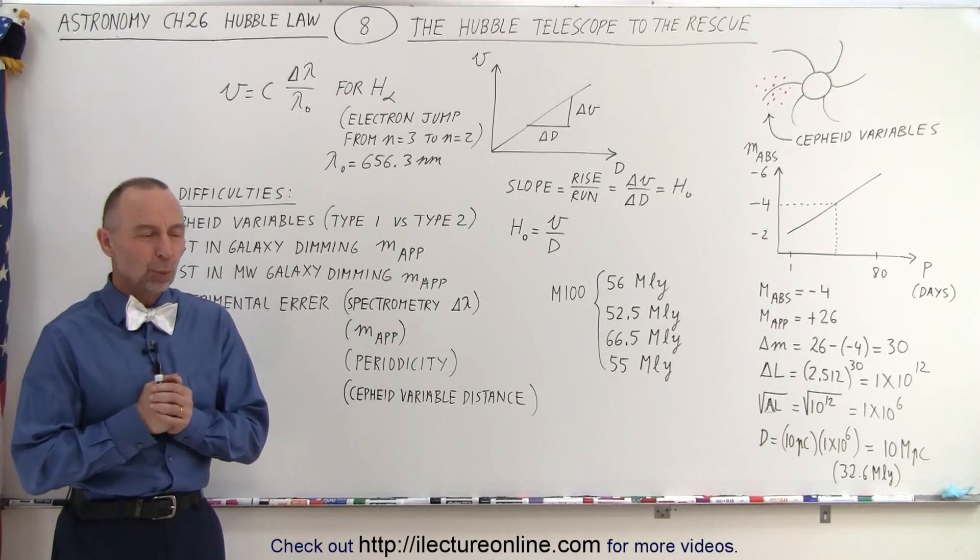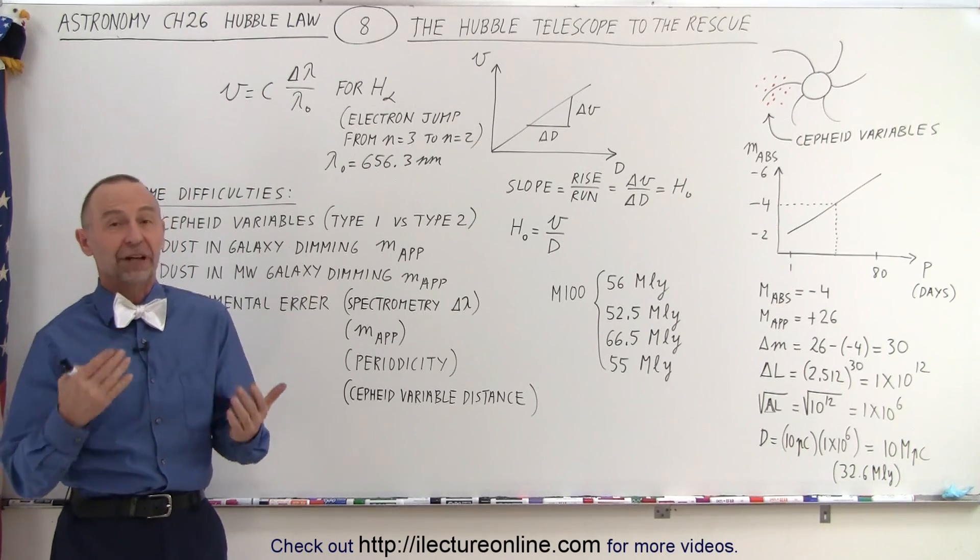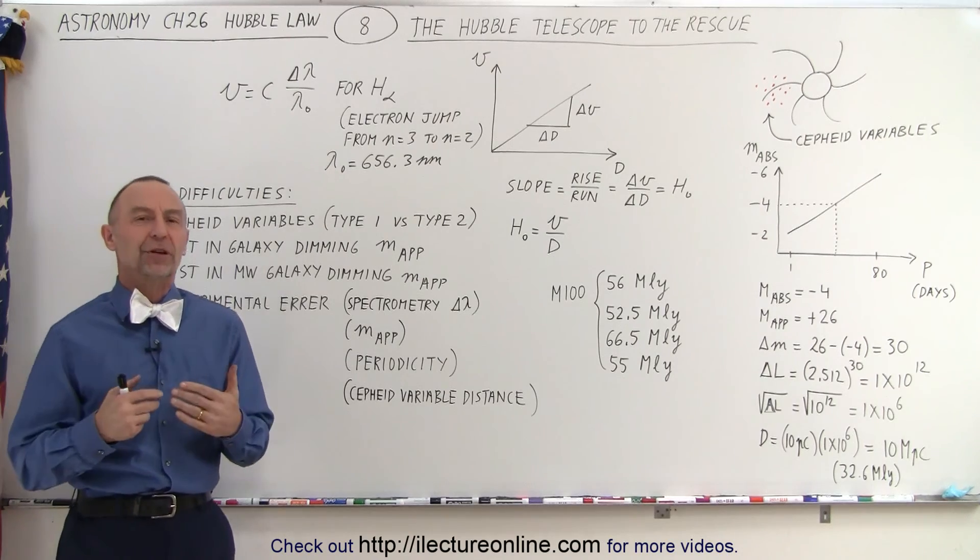Welcome to iLecture Online. One of the biggest problems in trying to get accurate values for Cepheid variables, their periodicity, their luminosity and so forth, was the Earth's atmosphere.